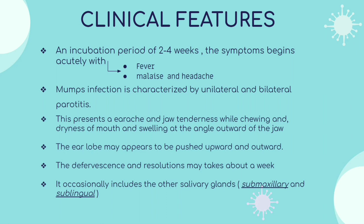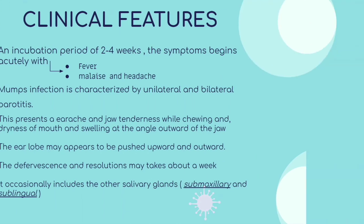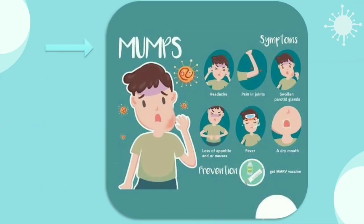It occasionally includes other salivary glands, for example the submaxillary and sublingual. Common symptoms of mumps include: headache, pain in joints, submandibular and parotid gland pain, loss of appetite and nausea, and fever. The best prevention is vaccination.